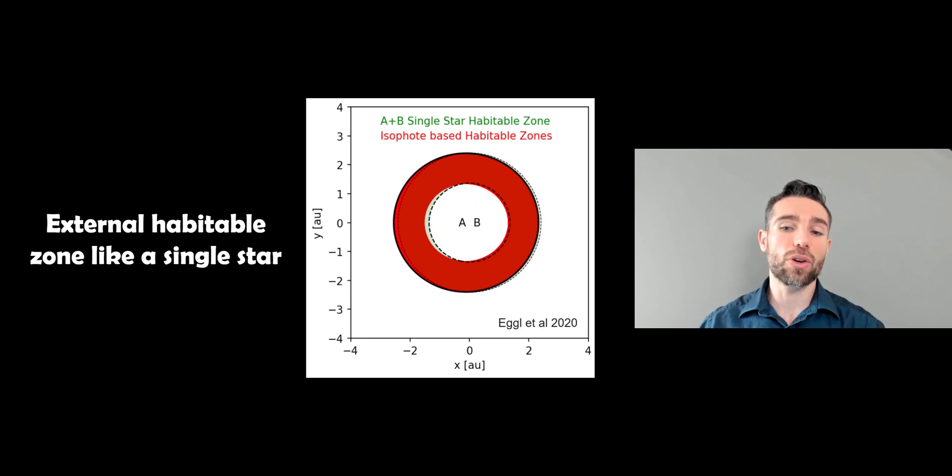And if you actually look at the external one, so if you had an external zone around these two stars, it looks fairly similar to what it would be if you just had a single star. You just kind of combine the two again. But it is a little bit distorted. It's not exactly symmetric.